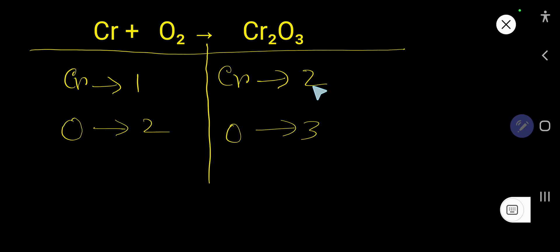So to balance chromium, here 2, here 1. We have to multiply here by 2 that gives us 2. If you multiply by something, that something must come before the atom. This chromium has come from here so we have to place coefficient 2 here.